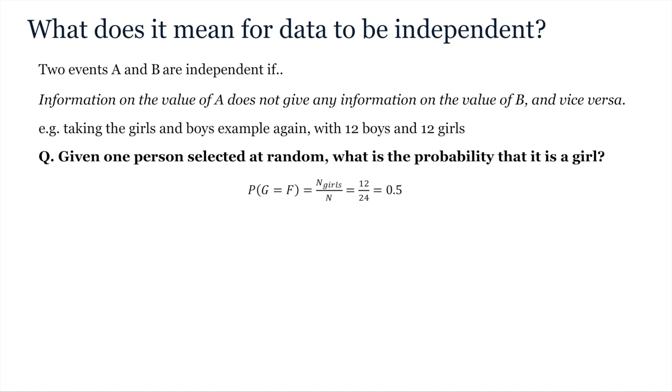To explain what this means let's look again at the example data set of features describing boys and girls and revise key concepts on probability. We can first estimate the probability that any random sample from the data set will return a girl. We have 24 samples in total and 12 of these are girls. So 12 out of 24 is a half, and so the probability of selecting a girl is 0.5.